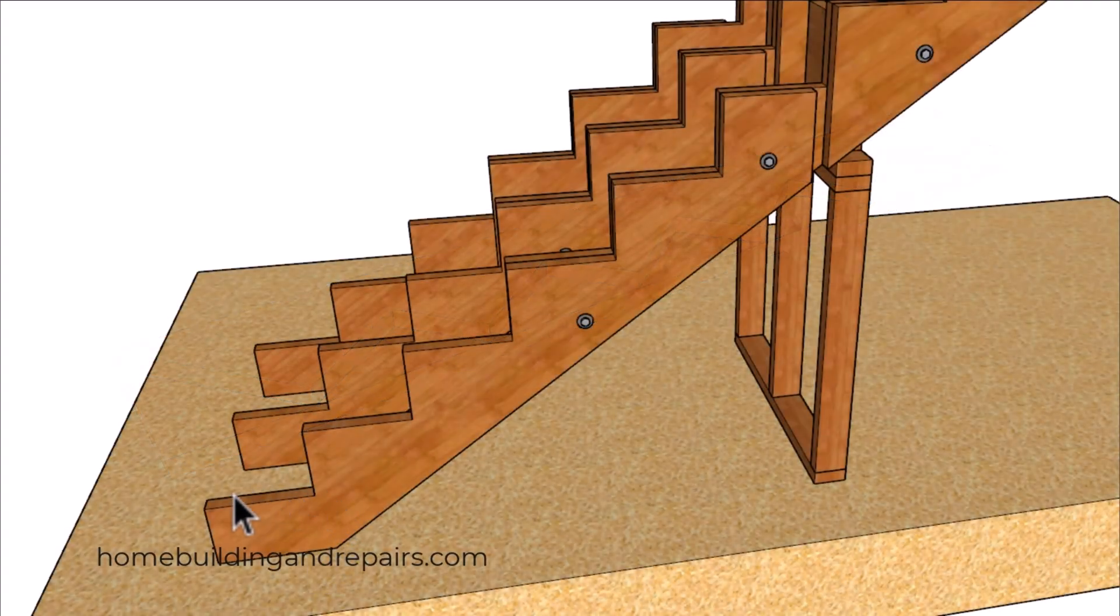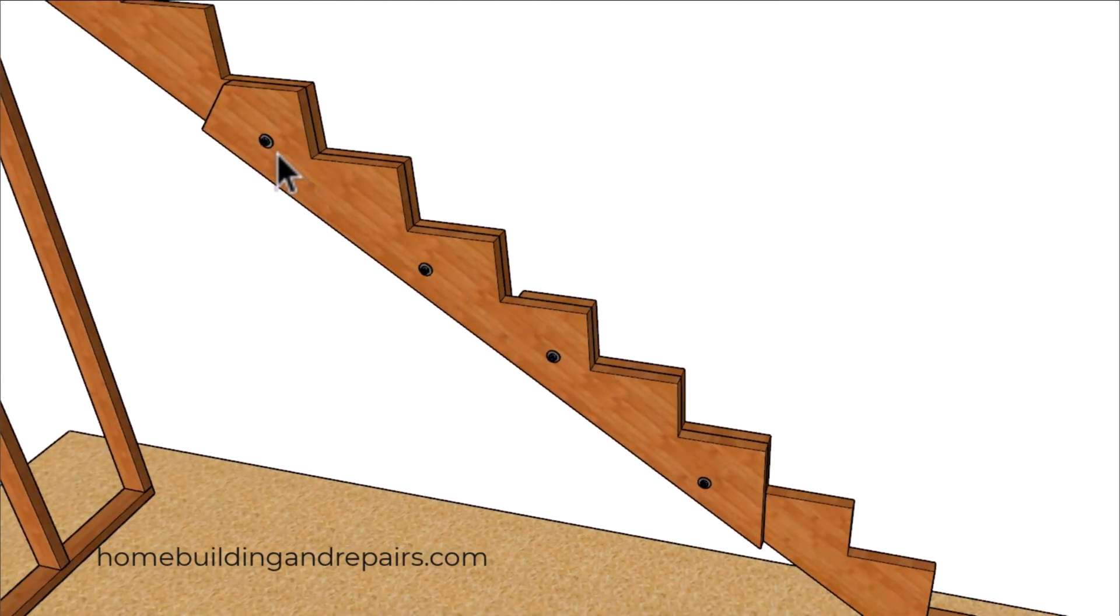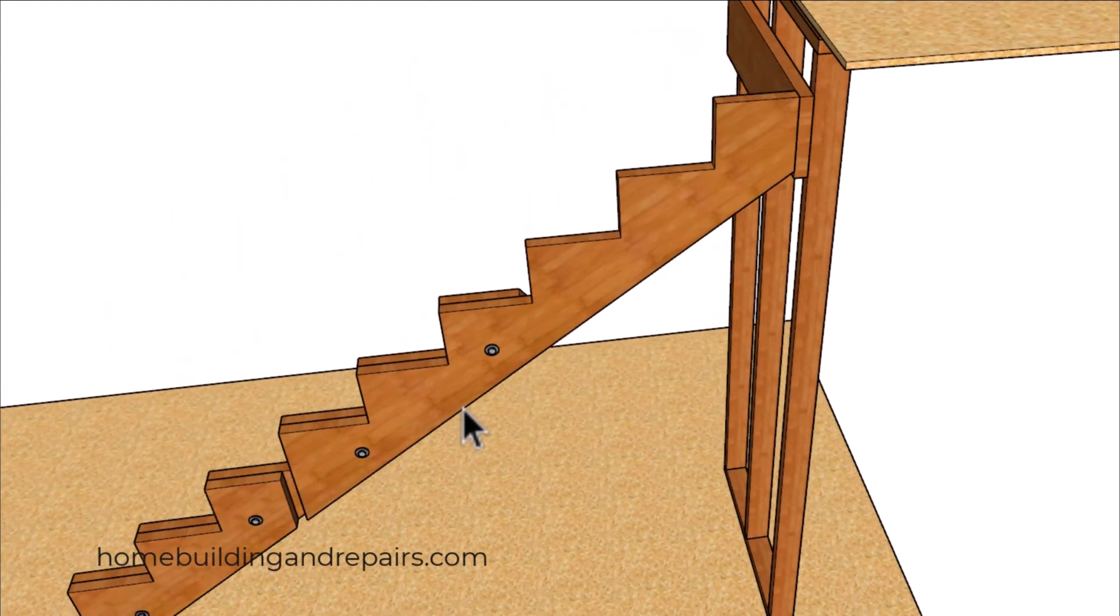You can see here where we have shaped the bottom of the stringer and used two bolts to connect it to the middle stringer. We're going to do the same thing in the next section up here. You can use as many bolts as you need to, or simply nail it together with 16D nails if you think that's going to work for your project. Keep in mind this is only a suggestion, and you might be required by your local building and safety department to get structural engineering approval on something like this.